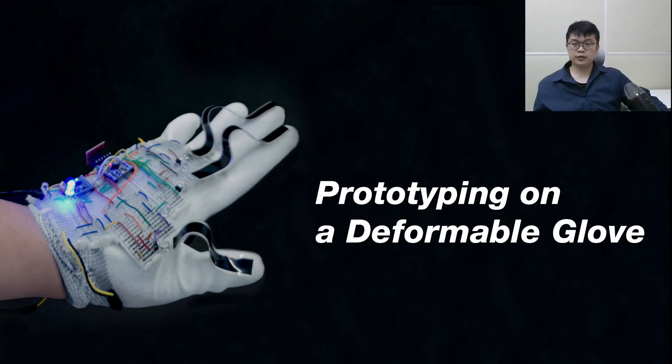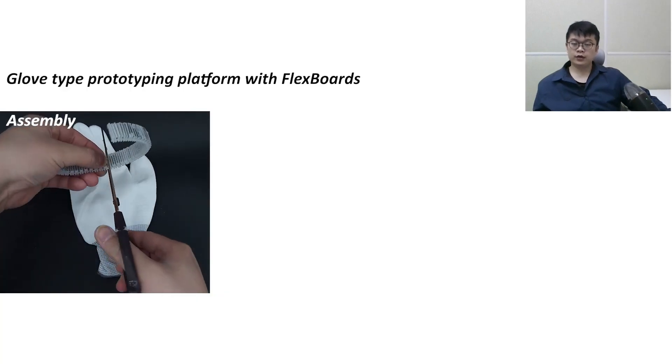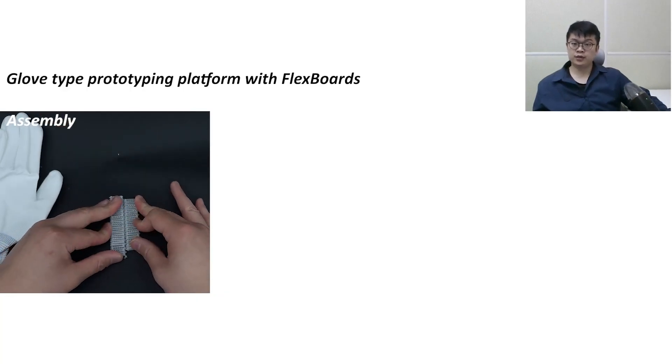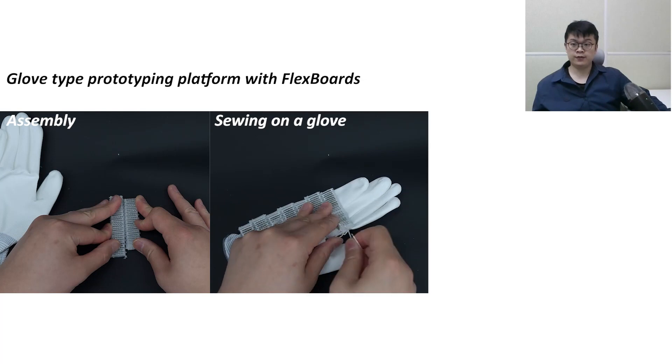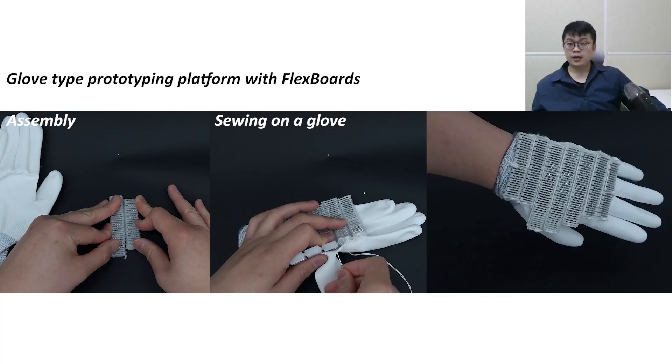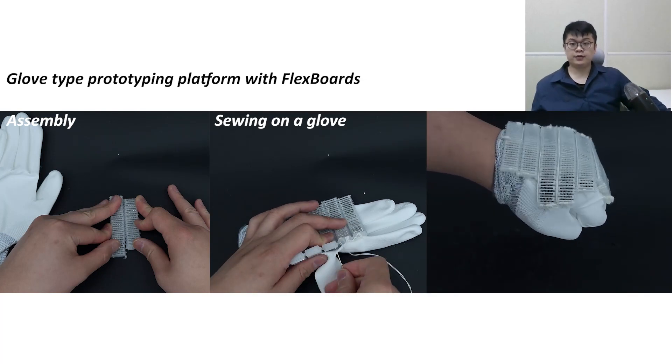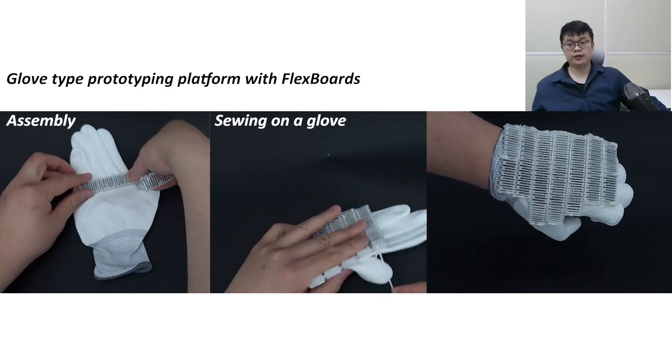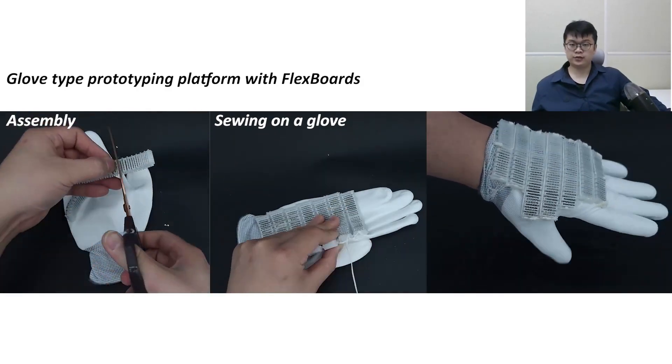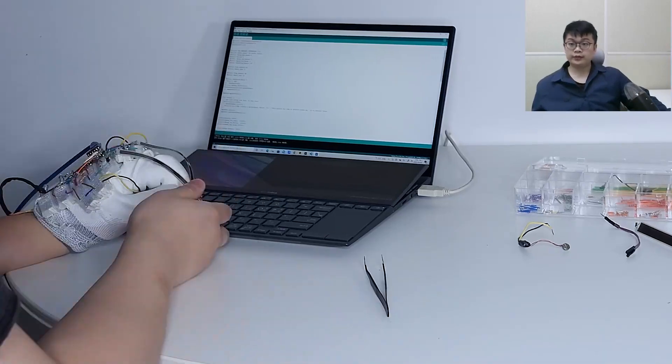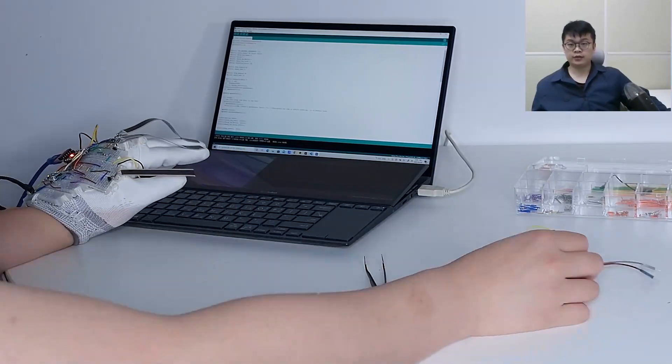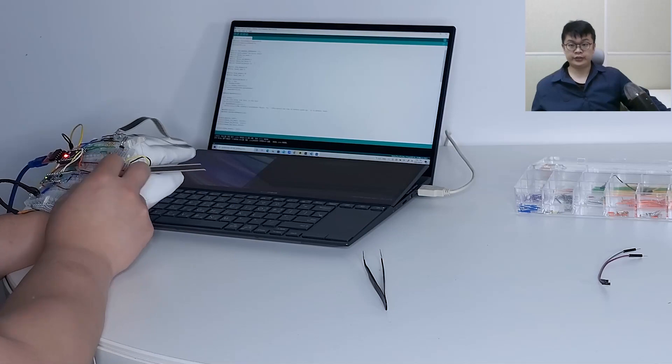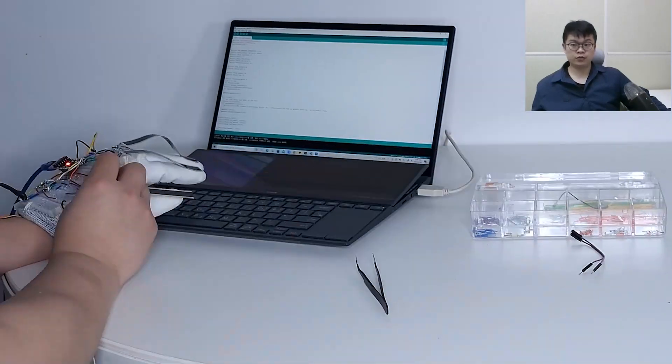The next example is prototyping on a deformable glove for development in VR context. First, we cut and assemble FlexBoard, and then we sewed the assembled FlexBoard on a glove. As a result, we could make a glove-type prototyping platform where our user can freely make hand gestures. While wearing this glove, it is possible to add components, test their gestures, or even modify the code.